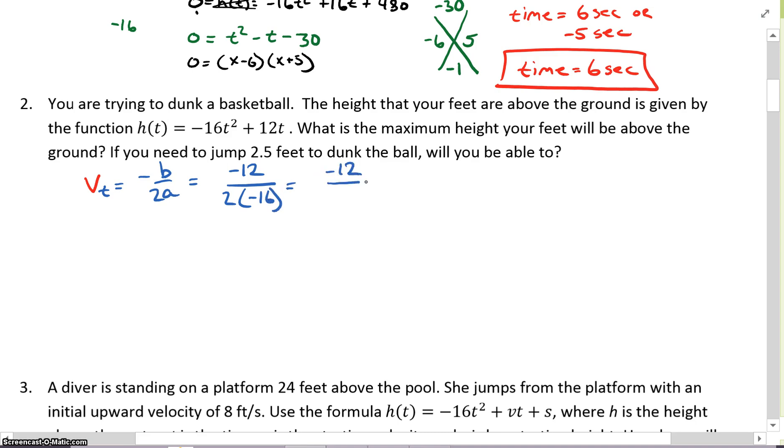That's going to be -12 over 2 times -16. So that's -12 over -32. We can cancel -4 from both. So that's going to be 3/8. So my maximum time is 3/8.